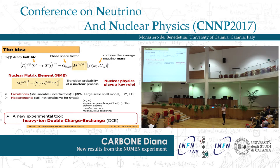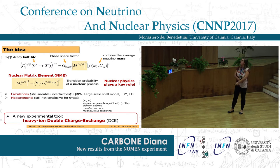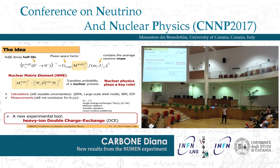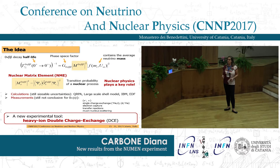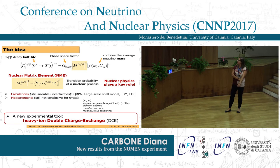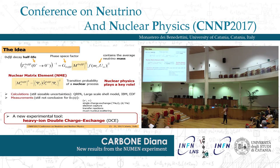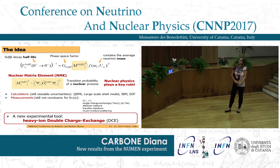Nuclear physics can play an important role in this term since it represents a transition between an initial and a final nucleus. Double beta decay is a nuclear process, so we can investigate properties of the nuclear matrix element with nuclear physics. We heard several talks on calculations for nuclear matrix elements with many different theoretical models, but the obtained values are spread over a quite large interval. There are many channels to probe the nuclear matrix elements but still no conclusive measurements.